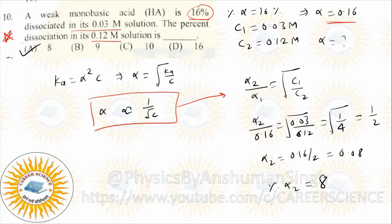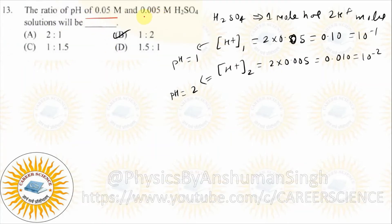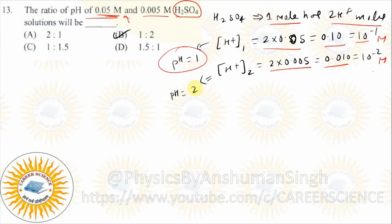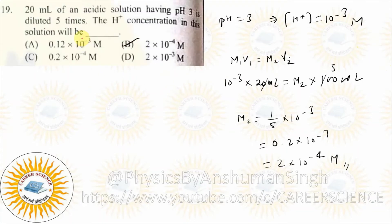Next: ratio of pH of 0.05 molar and 0.005 molar solutions. Take the ratio of pH for 0.05 and pH for 0.005. The concentrations are 10⁻¹ and 10⁻², so the ratio of pH will come out as 1:2. The formula for pH is pH = -log[H+].